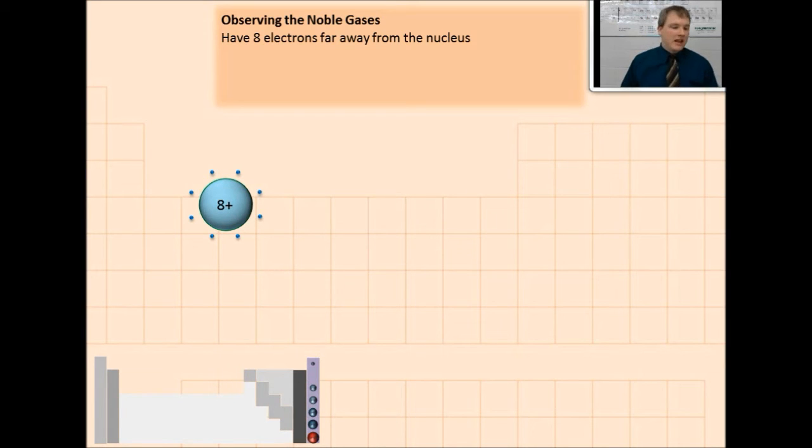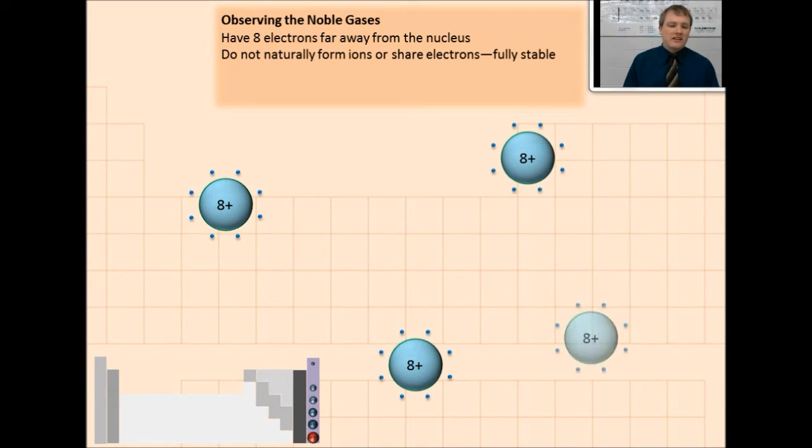Notice, neon has a full outer shell all by itself. It doesn't need to do anything with other atoms. It doesn't need to gain electrons. It doesn't need to share electrons. It's already fully stable. So it also has no reason to really interact with any other atoms around it because it doesn't need to do anything to get any more electrons.